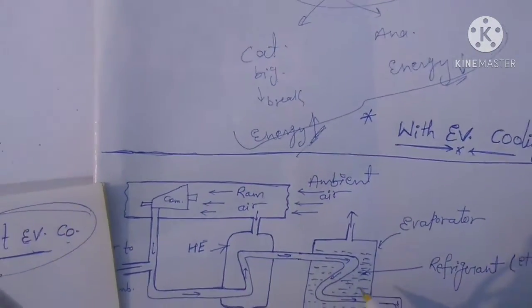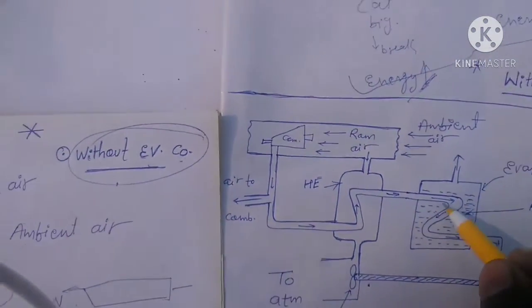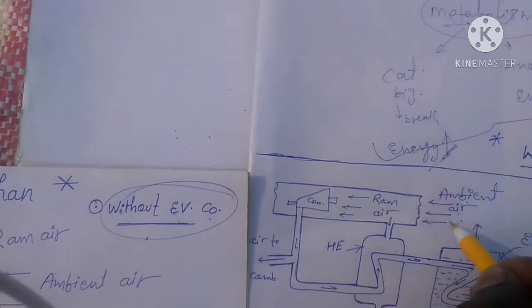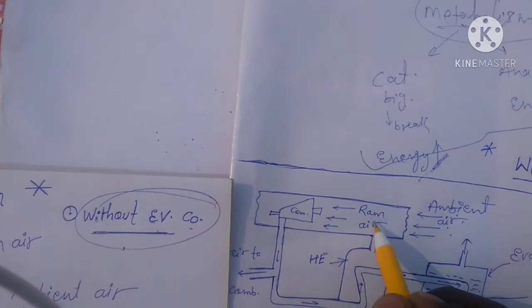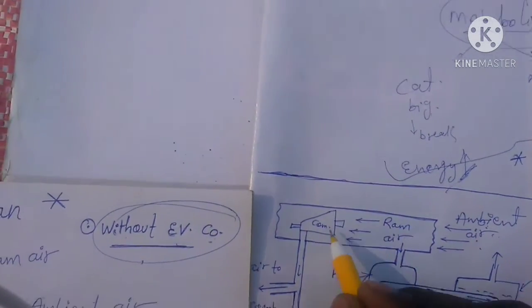You see here this is the evaporator, heat exchanger, and here is ambient air. The ambient air goes into the ram, and after a little bit of pressure and temperature increase, it goes into the main compressor.